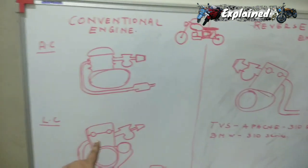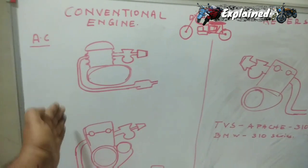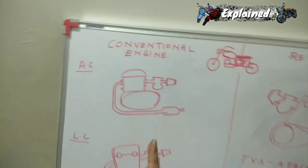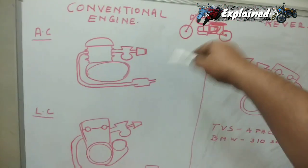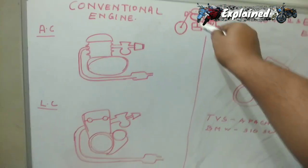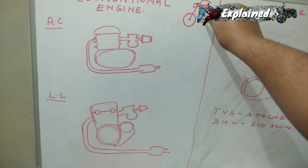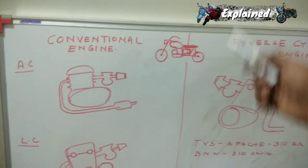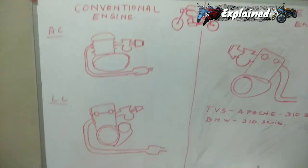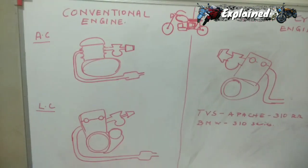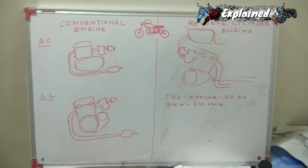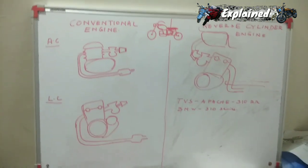The cooling problem could be taken care of with a liquid-cooled engine — the radiator would obviously be placed in front. However, since engines were forward inclined, there was still little space for the air filter and other components, even in that configuration. These were the prime reasons why the reverse cylinder layout was not in conventional use until recently.